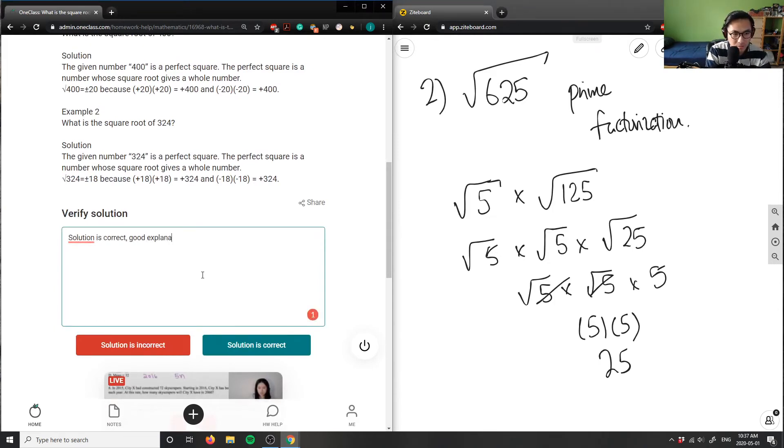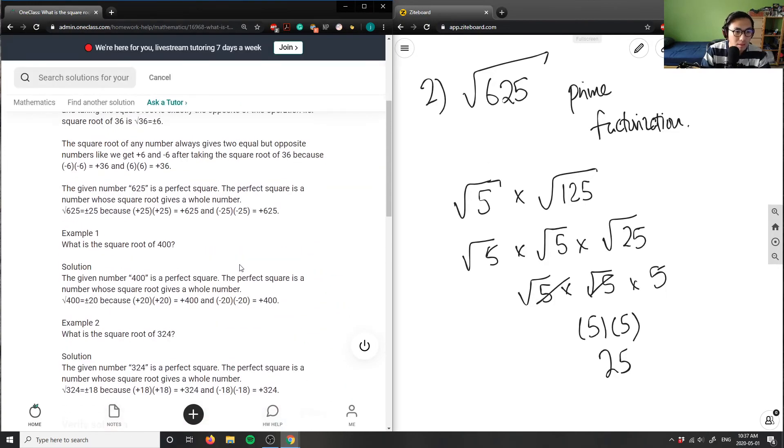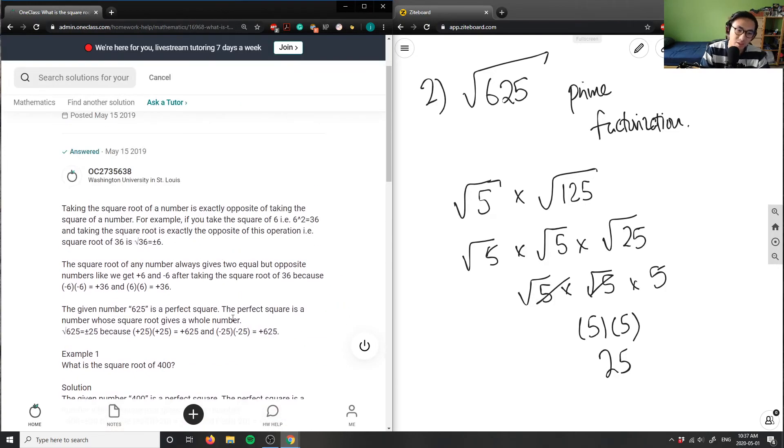Good explanation here. Did they take out a 5 like I did? No, they just said it was a perfect square.